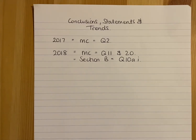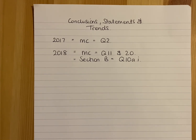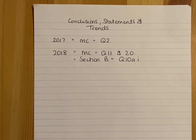This video is another part of a series on problem-solving aspects of the Higher Human Biology course. I'm going to cover a few points on this one — it'll be a shorter video than some of the others. It's basically about pulling conclusions, statements, and trends from graphs. The majority of questions I'll do will be multiple choice, because a lot of these are multiple choice questions.